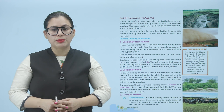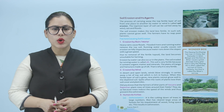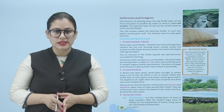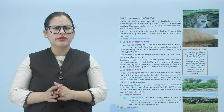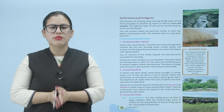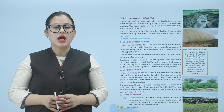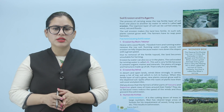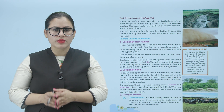Erosion by water can also occur in the plains. The soil eroded by running water is called silt. Silt is very fertile because it contains organic matter and minerals. The plains of Ganga and Yamuna are made up of silt; that is why they are very fertile.